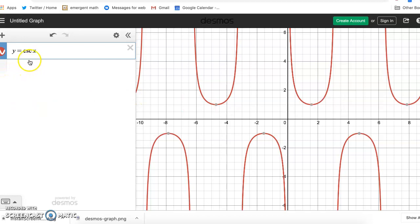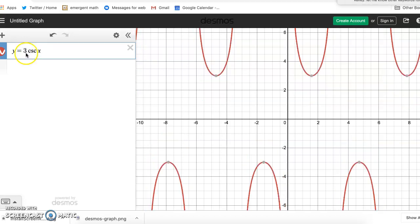But what makes it tricky is that we have all this other stuff. For example, we have a three in front of it, and you'll notice that that makes the gap expand. So instead of going from one to negative one, now the gap is from three to negative three.